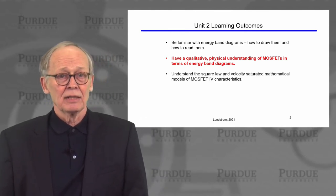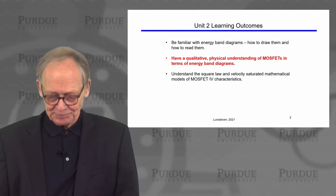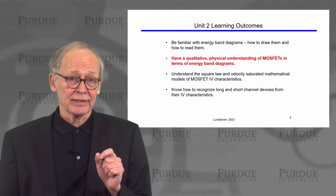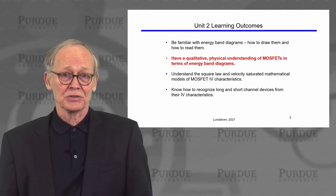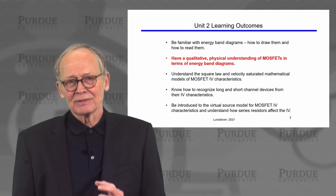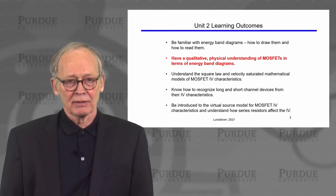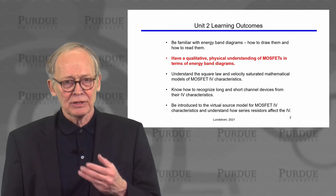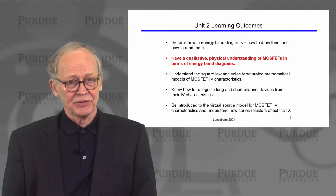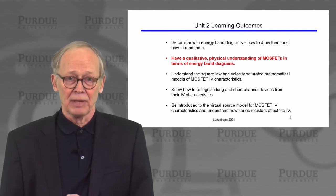We spent a little bit of time on the traditional theory of the MOSFET as it's been around since the 1960s and 1970s. It's important that you be able to look at an IV characteristic and say, that's a long channel transistor and that's a short channel transistor. We also introduced a simple compact physical model called the virtual source model that we're going to carry through for the remainder of the course. We will go back to this in each unit and refine it. By the end of the course, we will have a very simple but highly physical compact model that helps us understand the current versus voltage characteristics of modern transistors.